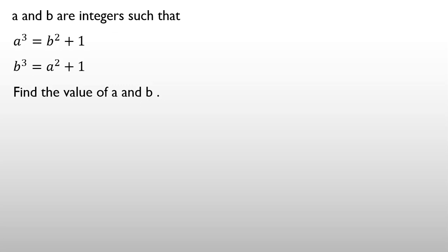When we have similar equations like this, you should subtract. The left-hand side will be A cubed minus B cubed, and the right-hand side will be B squared minus A squared. We should use two important identities.